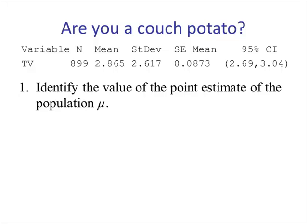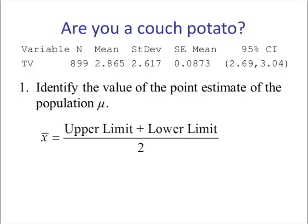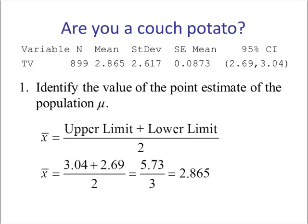So let's go back to the question. Number 1: what is the point estimate for the population mu? That's X-bar, which gives us 2.865.